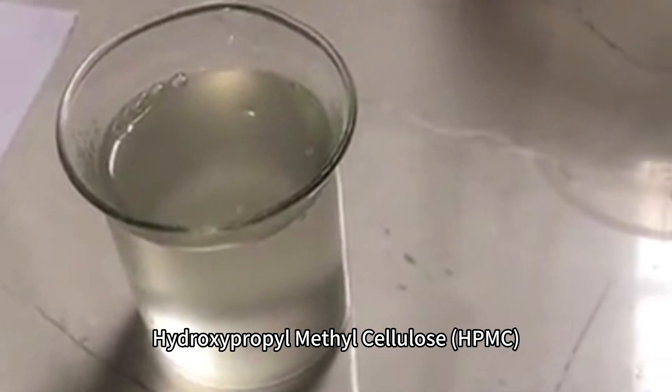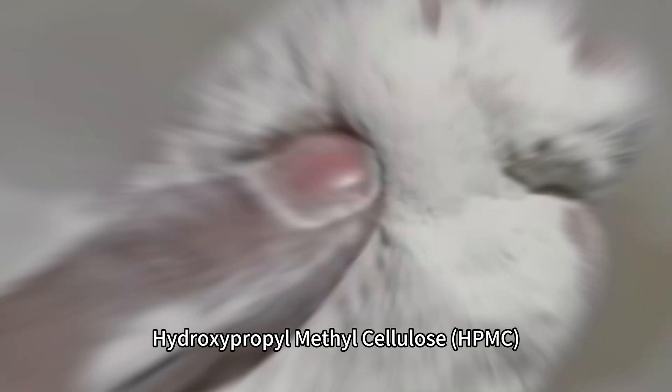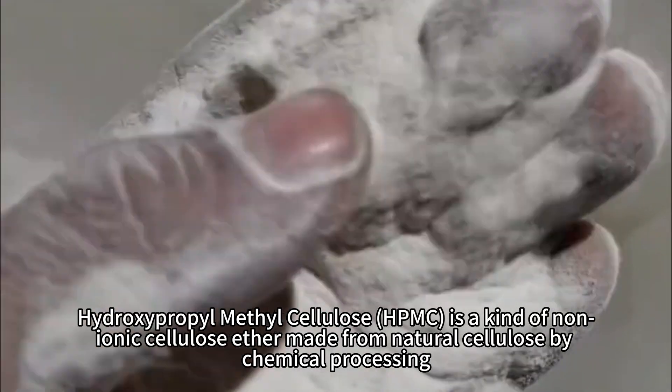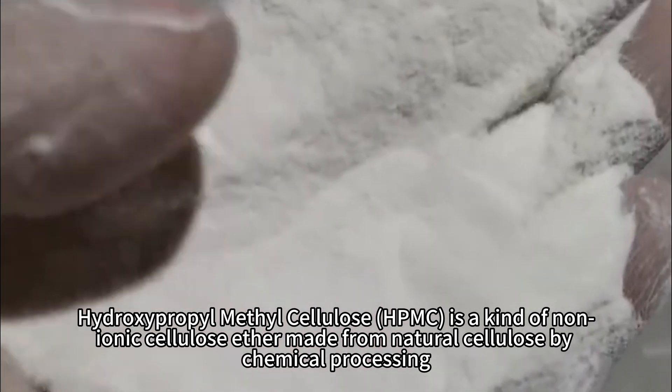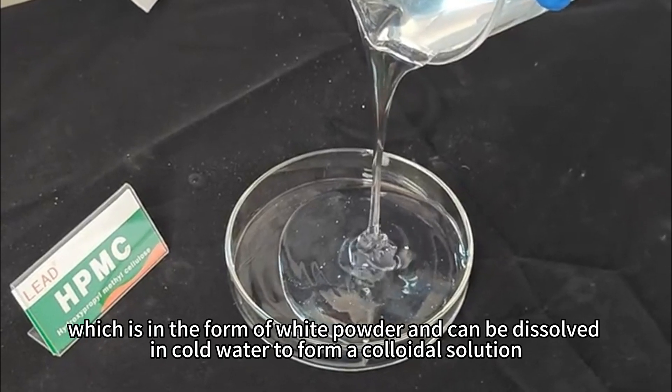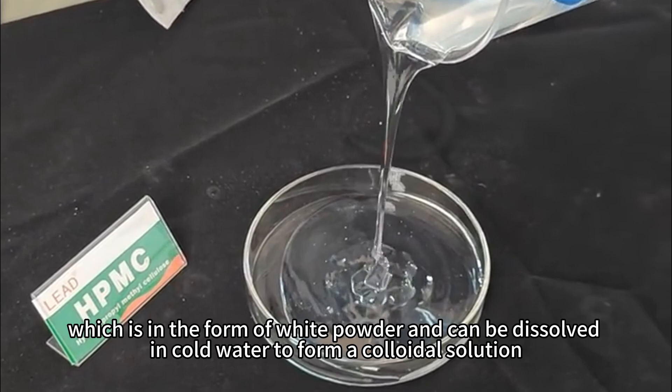Hydroxypropylmethylcellulose, HPMC, is a kind of non-ionic cellulose ether made from natural cellulose by chemical processing, which is in the form of white powder and can be dissolved in cold water to form a colloidal solution.